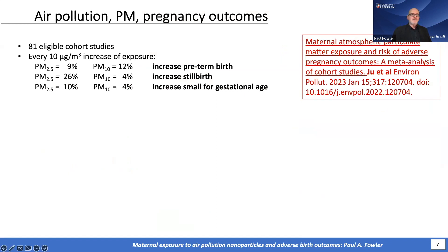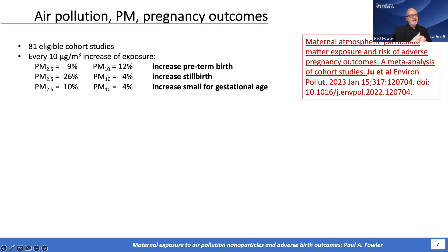So — air pollution and pregnancy outcomes. An important study came out in January this year. They took 81 eligible cohorts and did a meta-analysis to determine what those studies reliably showed. Three of the main findings were: preterm birth, which we know is bad for future health and function; small for gestational age, the same; and stillbirth, which is of course tragic for parents. All of these increase for every 10 micrograms per cubic meter of air the mother is exposed to. For PM 2.5 against stillbirth, there's a 26% increased risk of stillbirth.